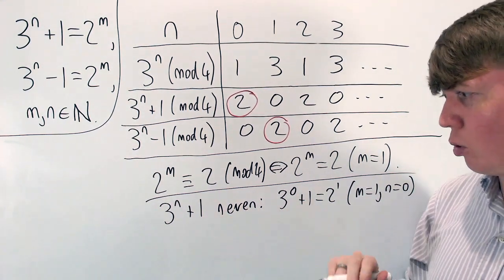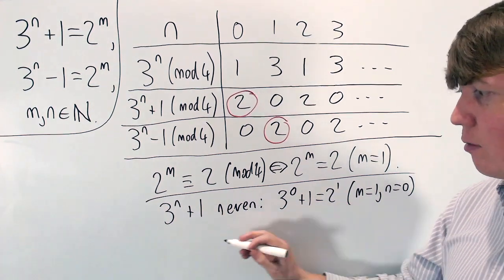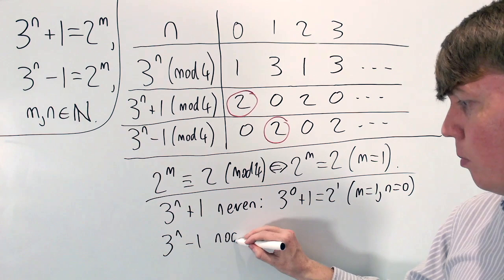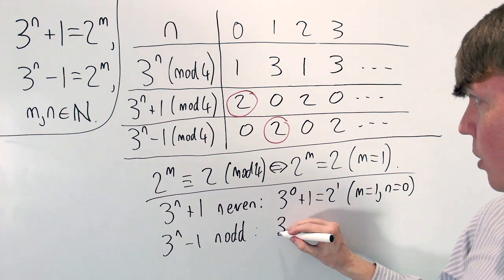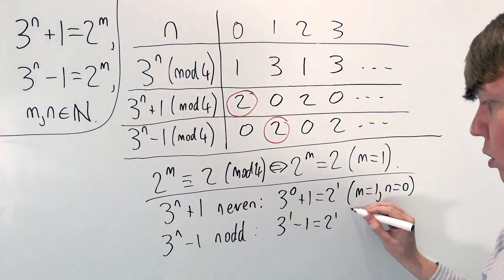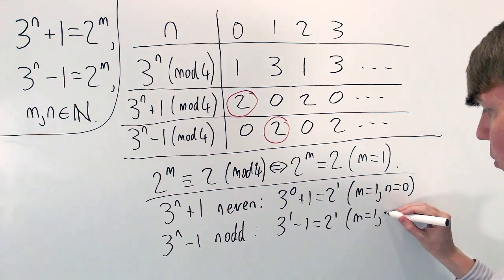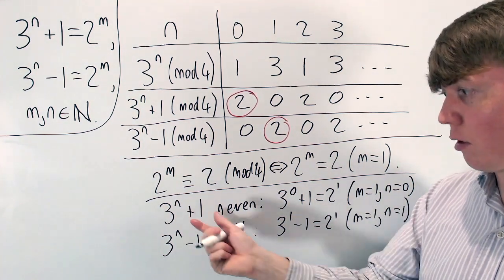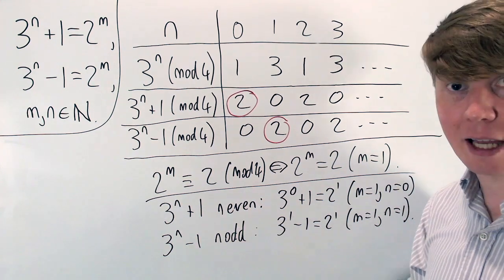So here we've covered a quarter of all our possibilities. For 3 to the n minus 1 equalling a power of 2 with n odd, we rule out all remaining odd powers. The only possibility that works is 3 to the 1 minus 1 equals 2 to the 1, corresponding to m equals 1 and n equals 1. So we've now covered half of all our possibilities: 3 to the n plus 1 with n even, and 3 to the n minus 1 with n odd.